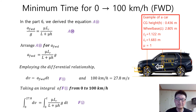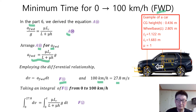Now let's calculate the minimum time in the case of front-wheel drive. In Part 6, we derived equation a10. Arranging a10 for a sub FWD, we can get the expression here. Employing the differential relationship, we can get equation f11. Employing the unit conversion — 100 km per hour equals 27.8 m per second — and taking an integral of equation f11 from 0 to 100 km per hour, we can obtain equation f12.